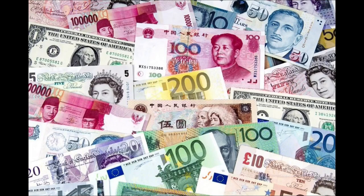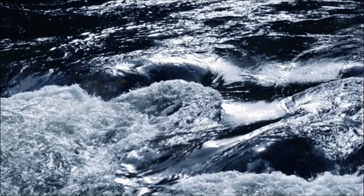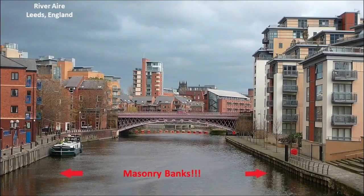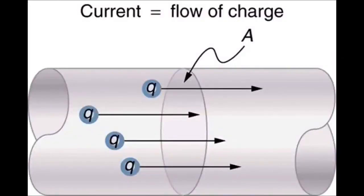What do banks deal in? Currency. Currency is defined as a system of money in general use in a particular country. What is a river current? A river current is defined as the water moving in a river. What is a river bank? It is defined as the land at either edge of a river. What is a river? A large natural stream of water flowing in a channel to the sea, a lake, or another such stream. What is an electric current? A stream of charged particles, such as electrons or ions, moving through an electrical conductor or space.